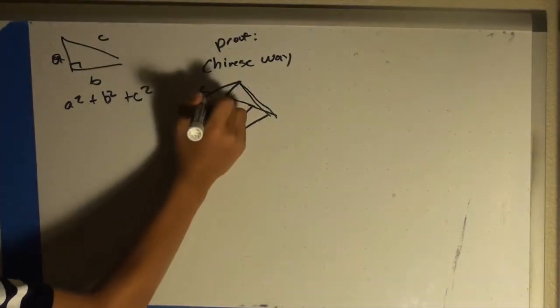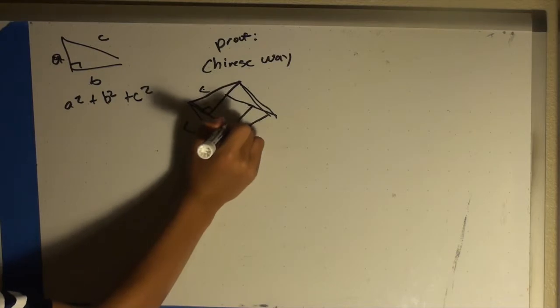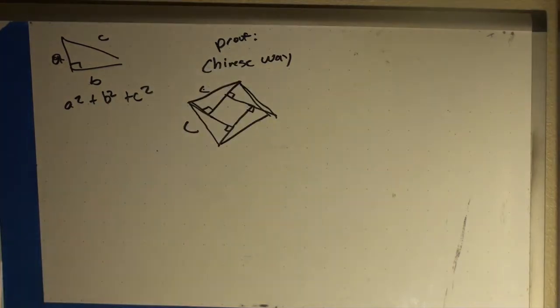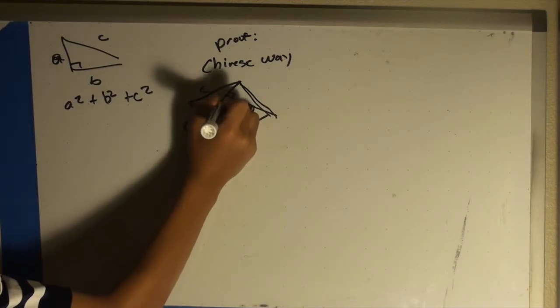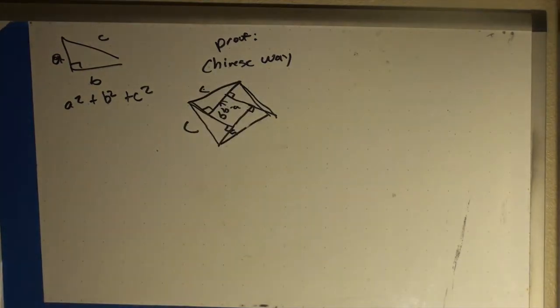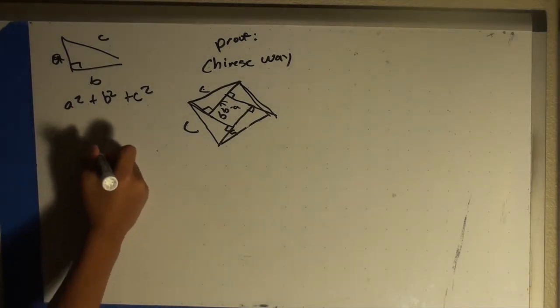Basically, you can see four right triangles. The hypotenuse of the right triangles is c, and there are two legs, a and b. The smaller square's side length is b minus a.